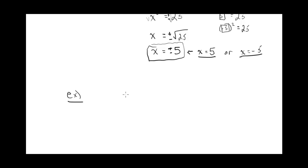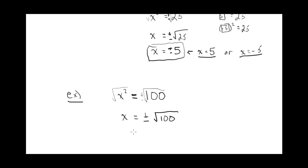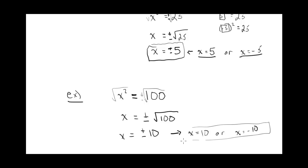Just another example: x squared equals 100. Take the square root of both sides, remembering that we have to do positive and negative. So x would be equal to positive or negative square root of 100, which would be x equals plus or minus 10. You can just write it like this — it's understood that we mean plus or minus 10. That says x equals 10 or x equals minus 10.